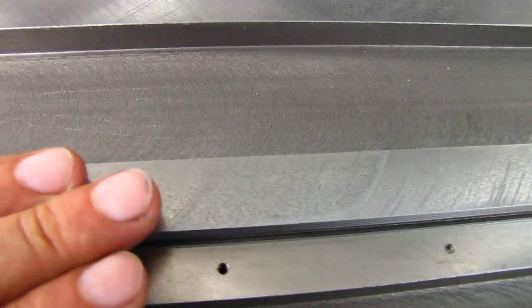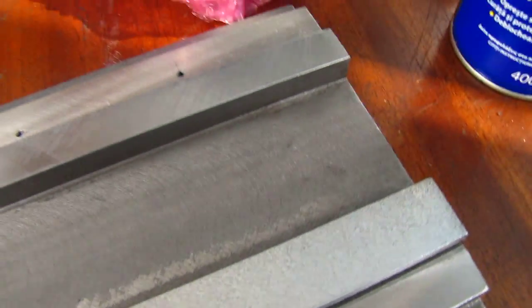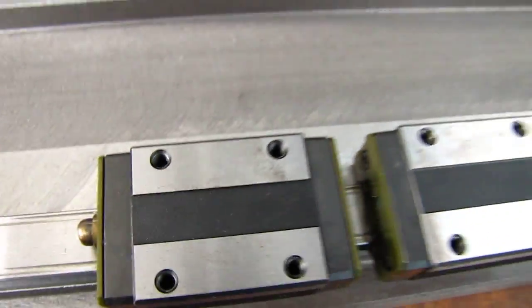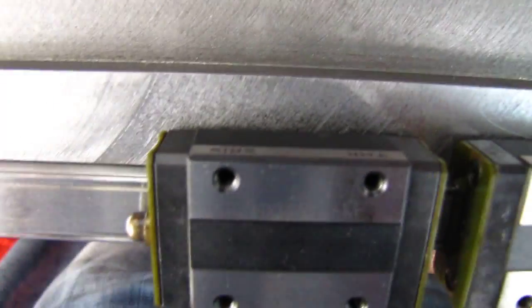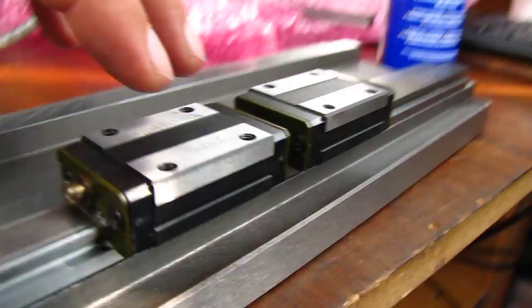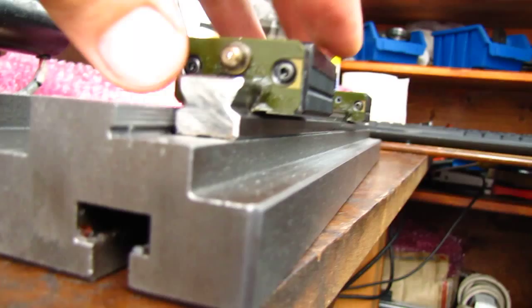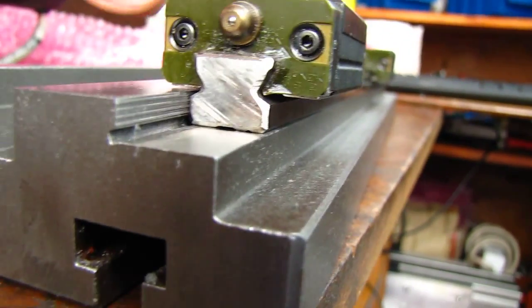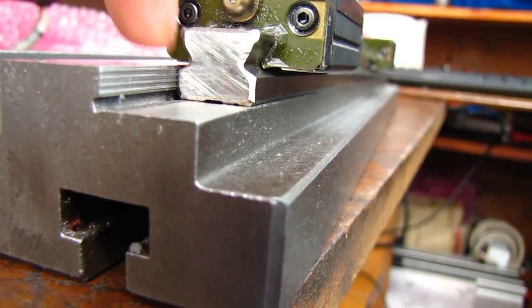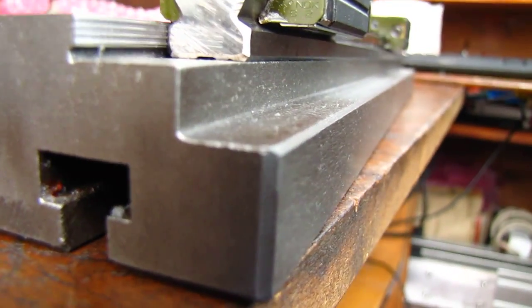I had to cut on top here because I have some nice linear rails from DHK, used of course from eBay. Because I planned to mount them like this, I had to make clearance for the block so it can slide on top of this surface. So I had to cut a bit of that with a fly cutter.